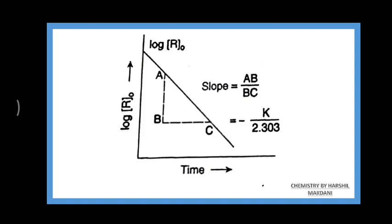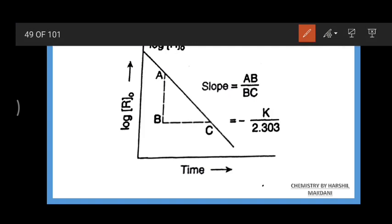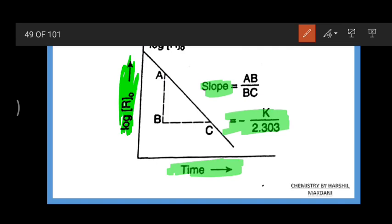Let us see the graph for first order reaction. The slope of the graph of log[R₀] versus time is -k/2.303. The y-intercept is log R₀, and this gives us our graph for the first order reaction.